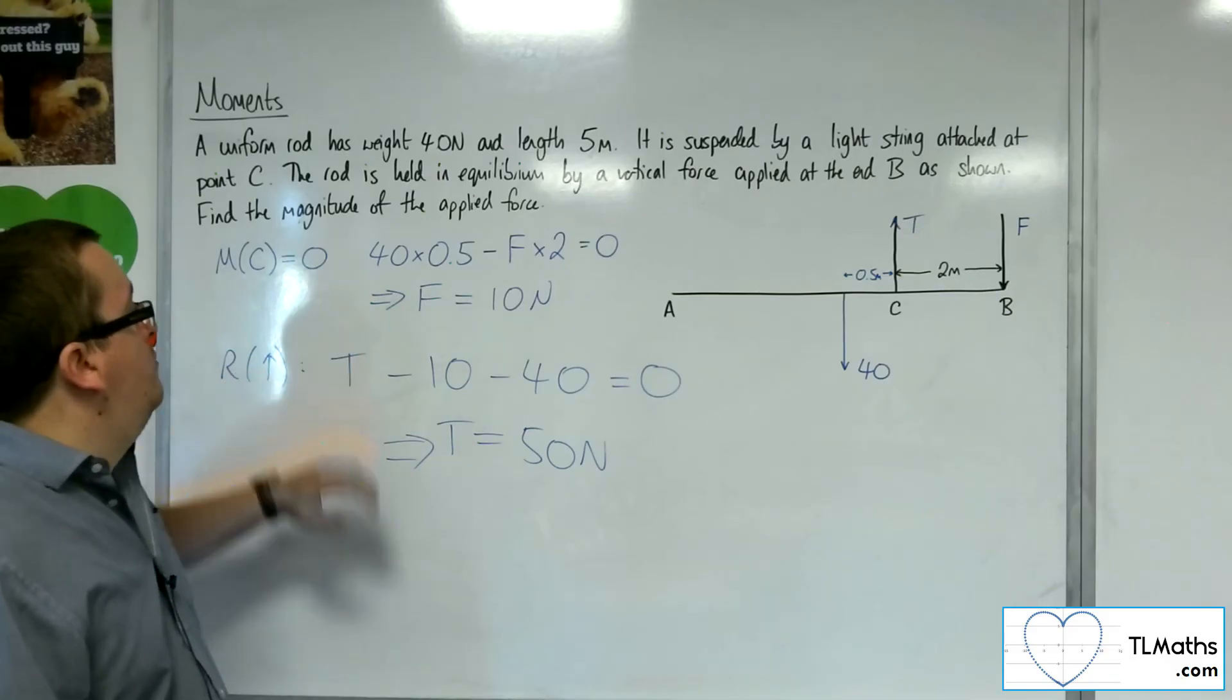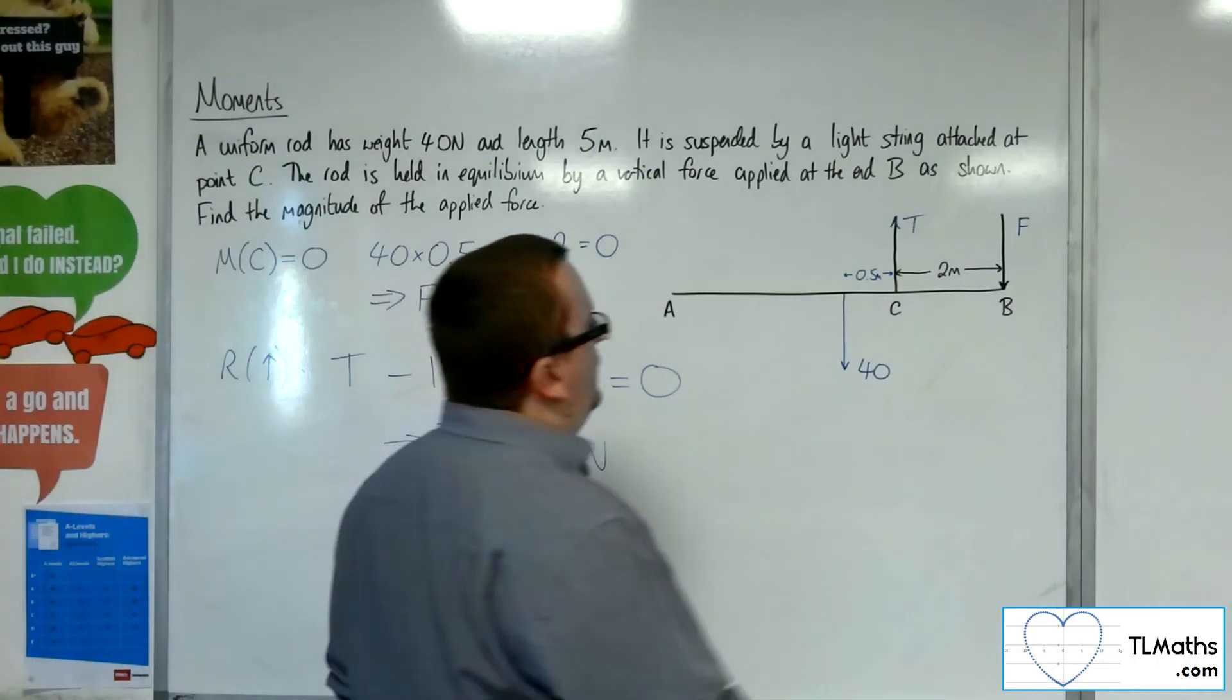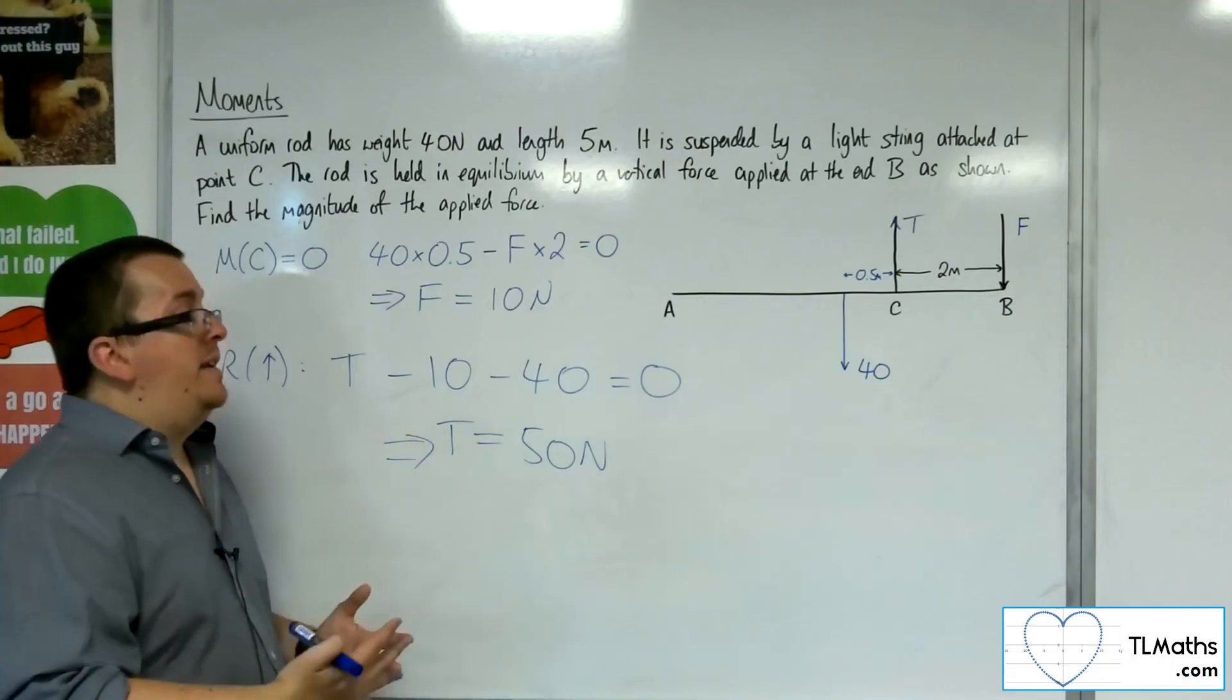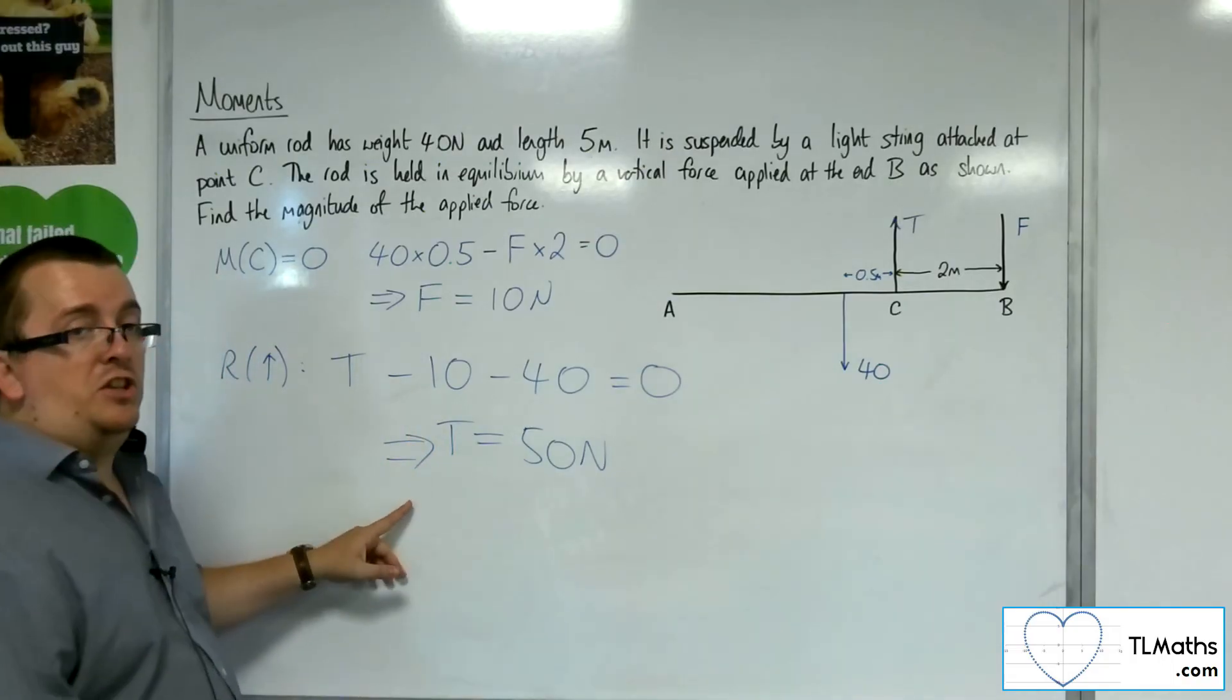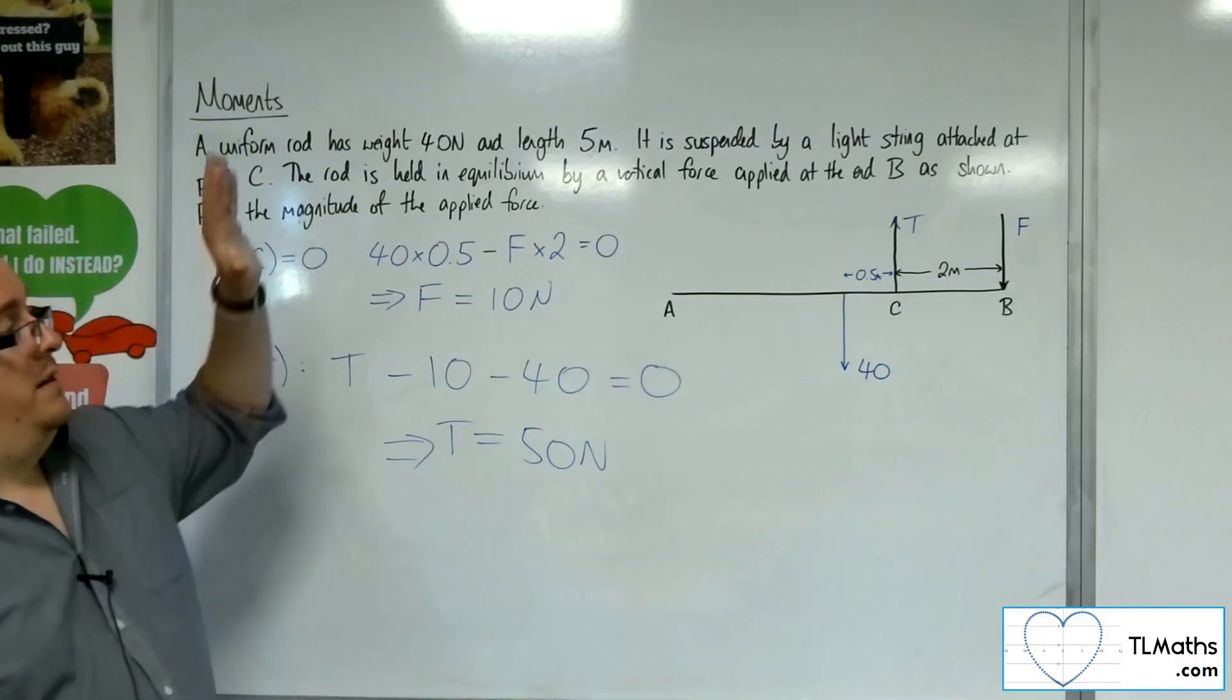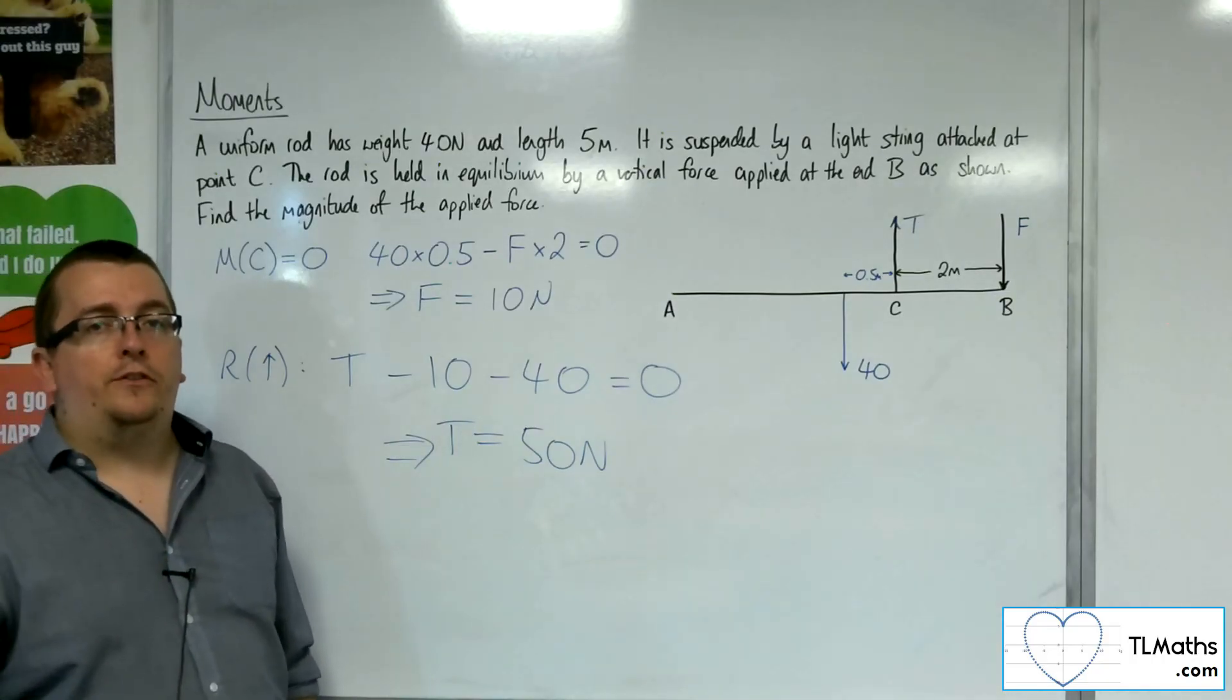But finding moments about C allowed us to find F easily. If we'd taken moments about another point, say the centre of mass here, then I would have had an equation that involves both T and F, and then I would use that to find T, substitute it into the other equation to find F. It would take a little bit more time to do. So choosing to take moments about C worked well for us, because then we didn't have to worry about the tension in the string.